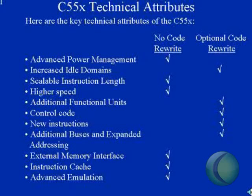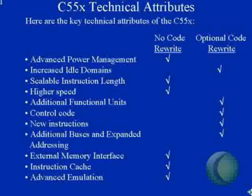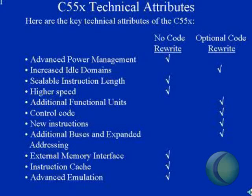We have a scalable instruction length. What that means is that we have 8-bit, 16-bit, 32-bit, and even 40-bit instructions, which actually results in increased code density efficiency. For example, if it's going to take an additional byte to store a constant, rather than needing to add a whole word or two bytes, only one byte will be added to a 16-bit instruction, giving us a 24-bit instruction, and code density improves.